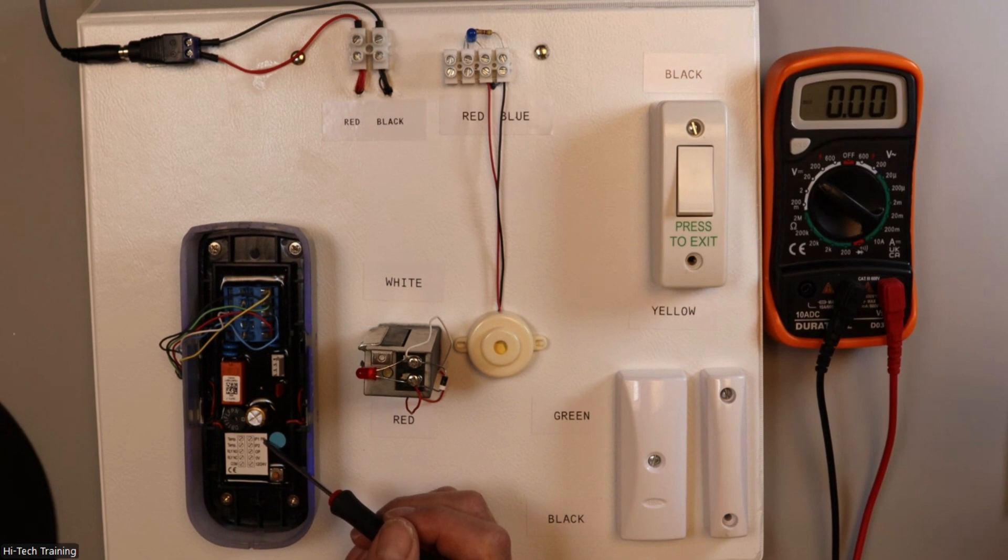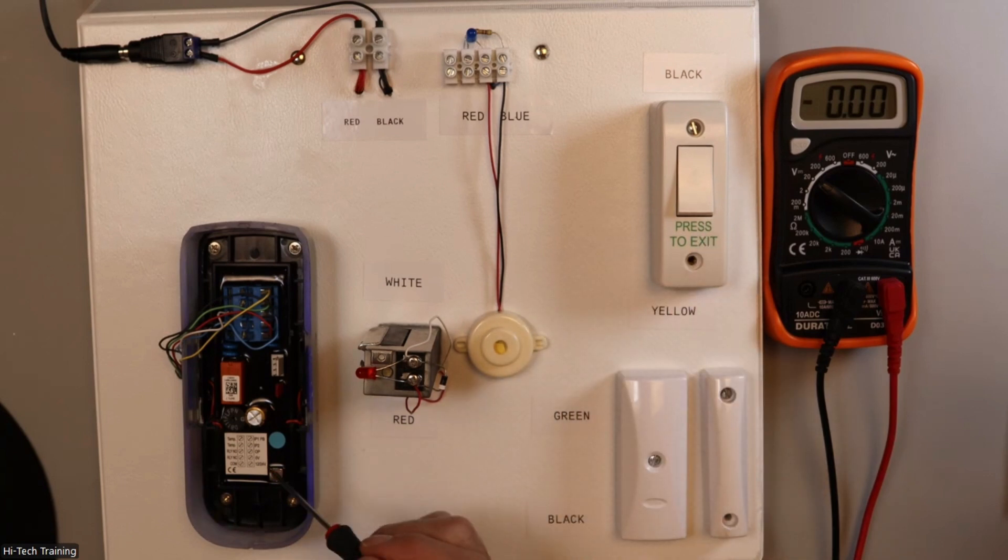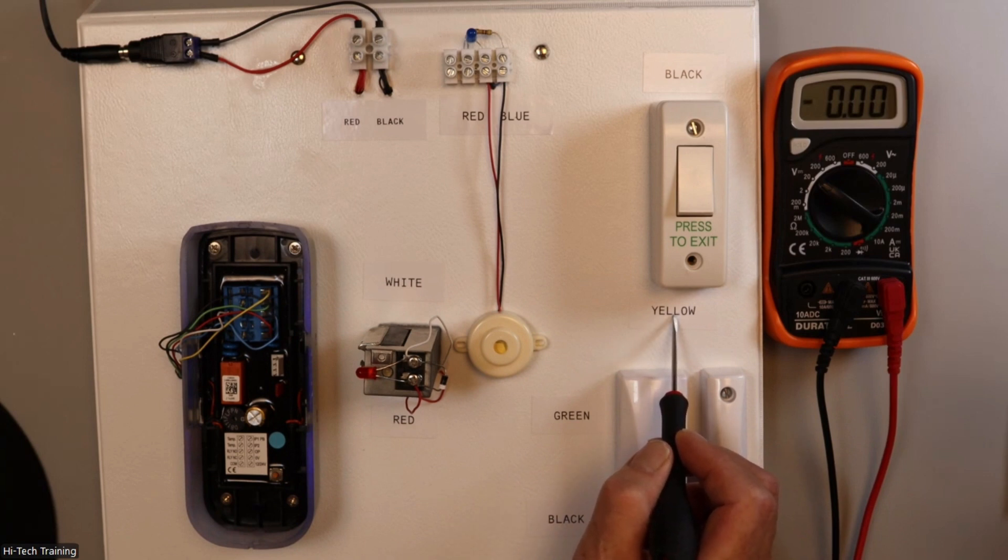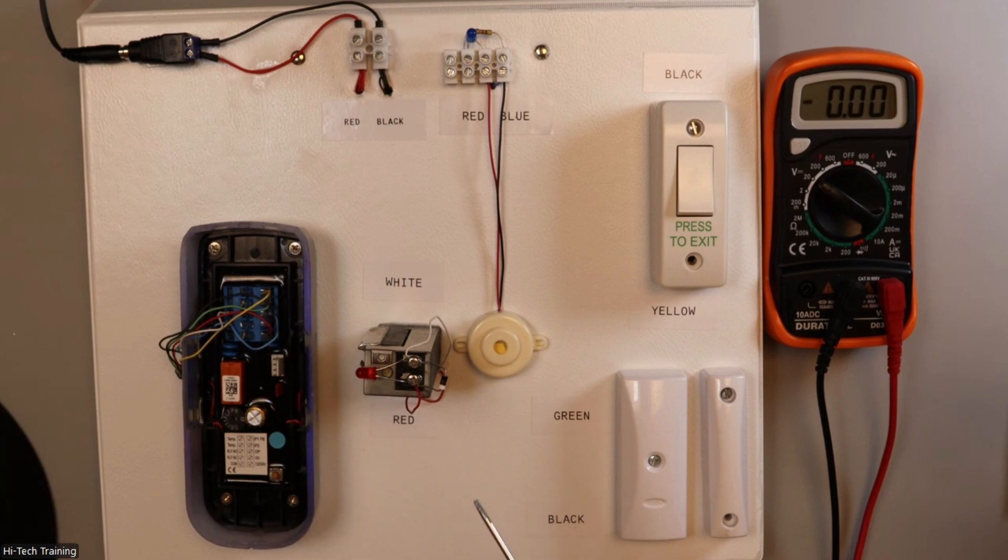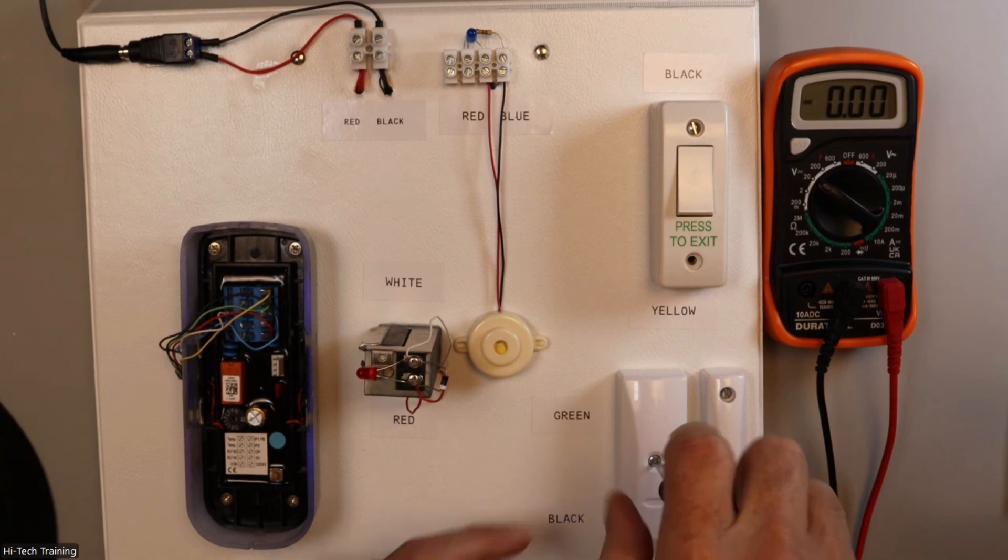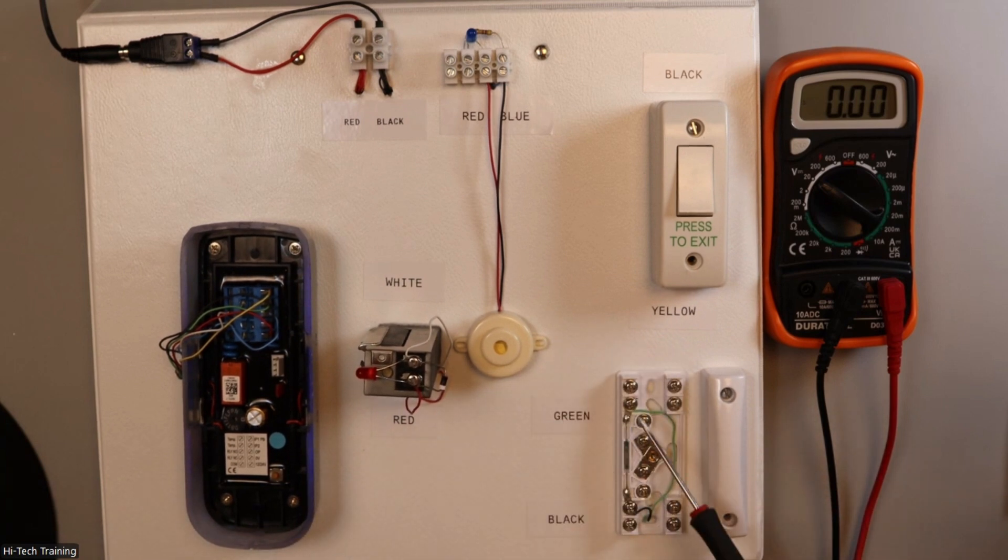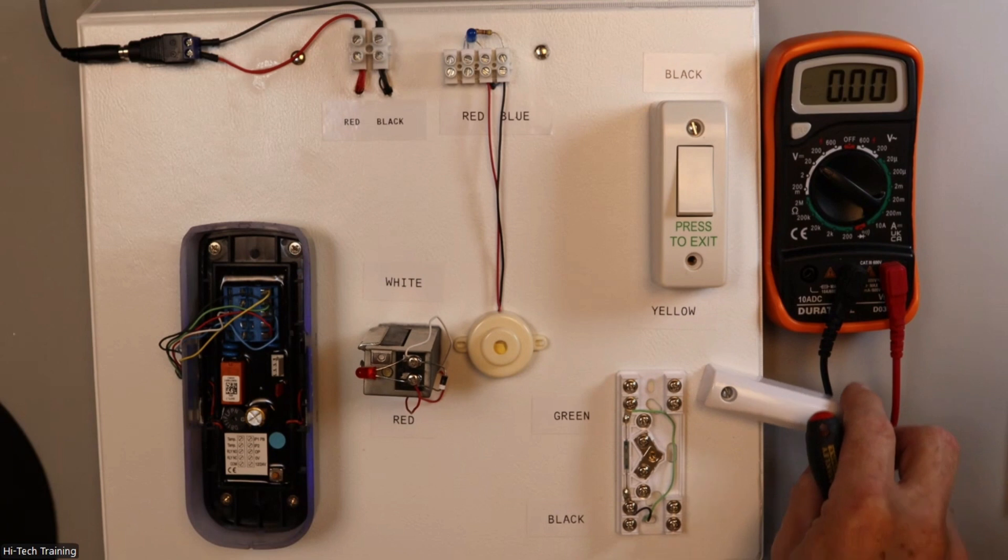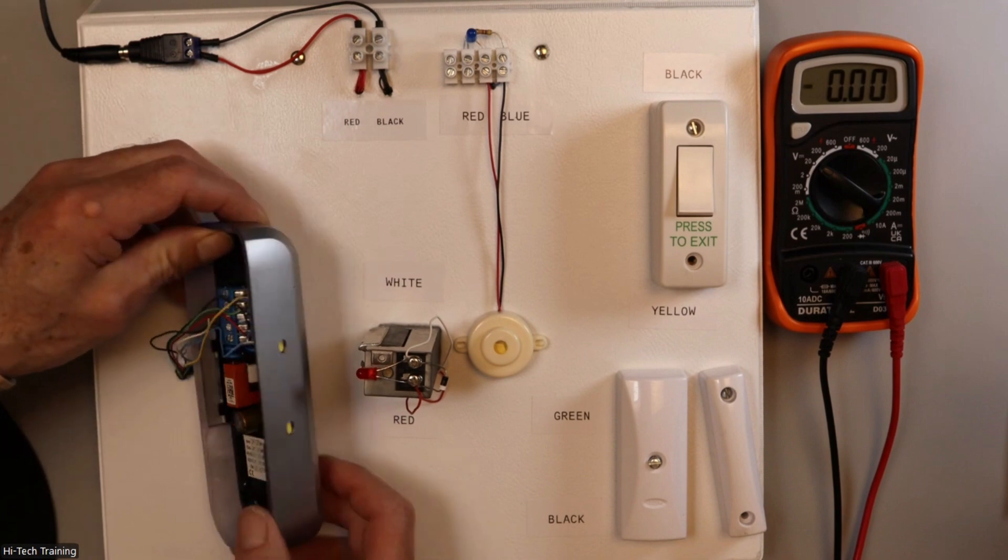IP1, that input is set up all the time and is used for your exit button here. So you can see on input one here I've got a yellow wire. Input two here isn't set up in the default condition. That's a green wire that comes from the magnetic reed contacts. The actual magnet here to open the doors as well.